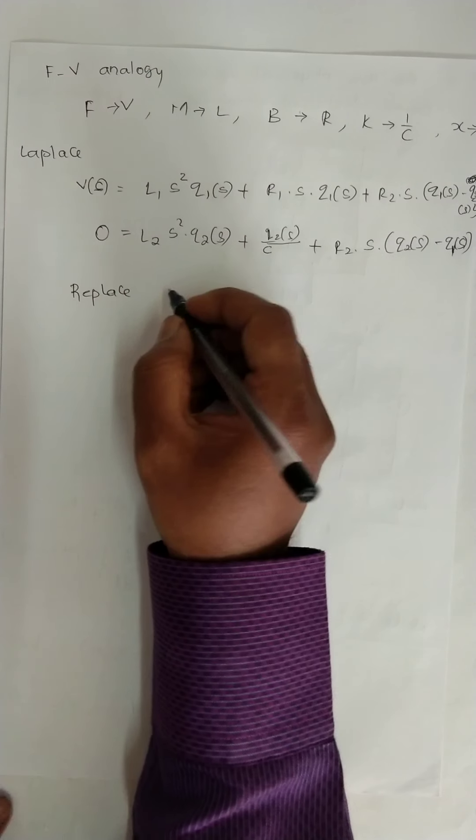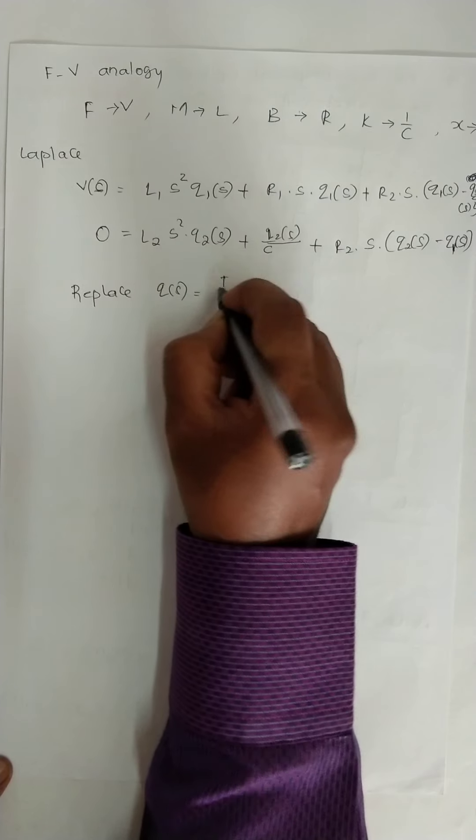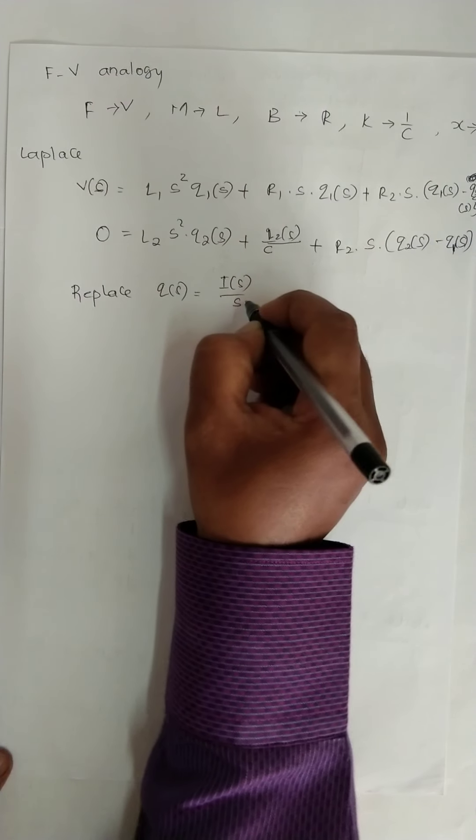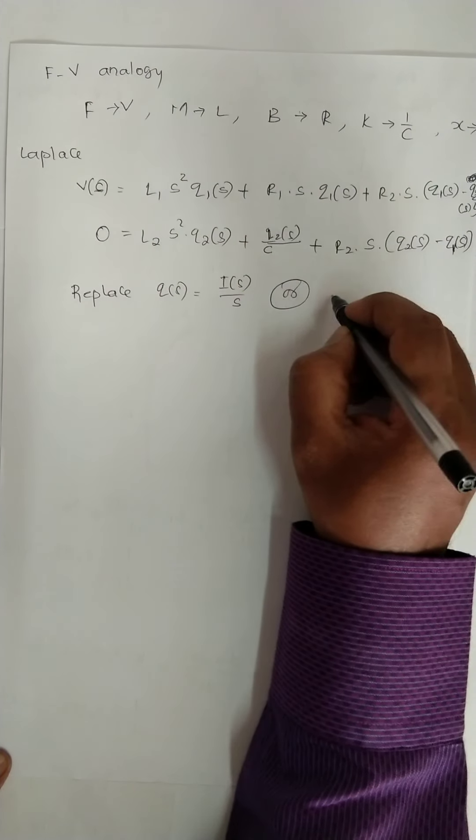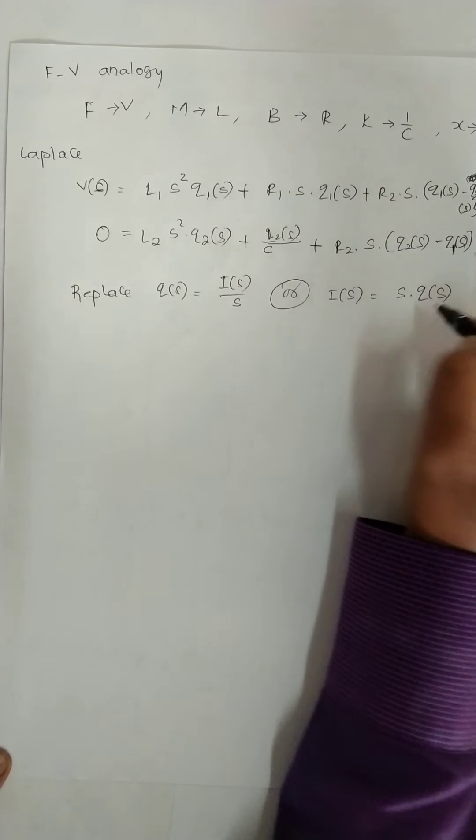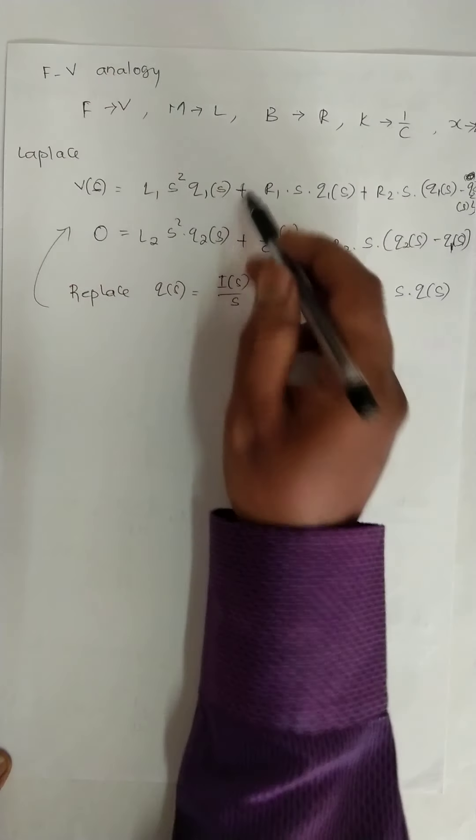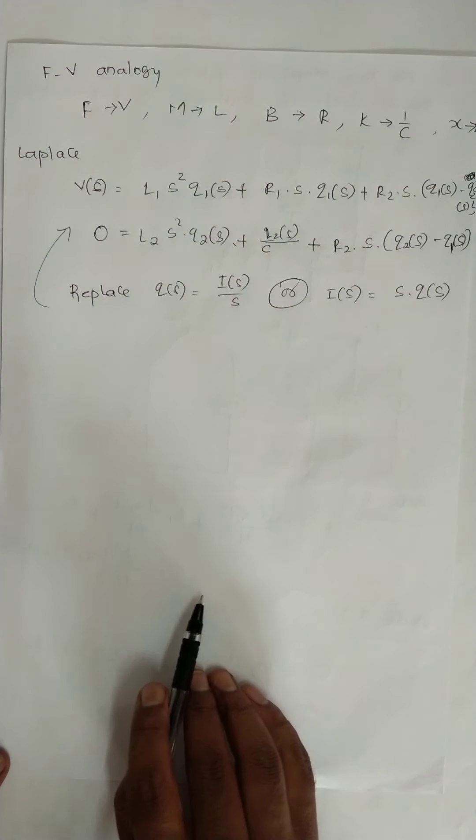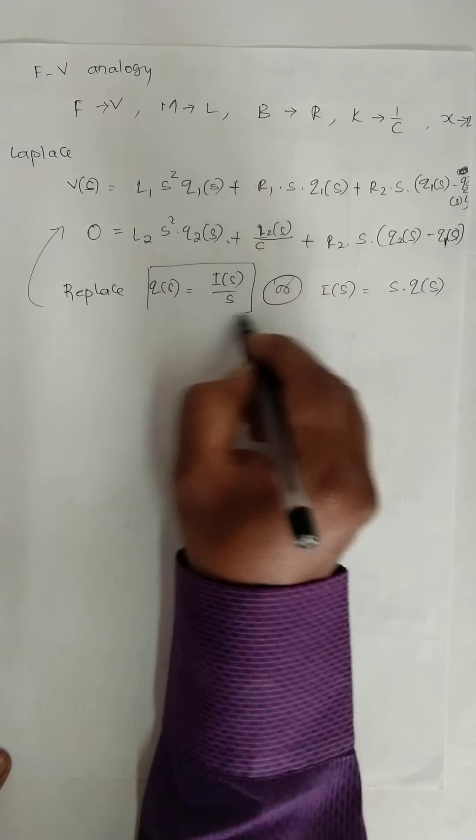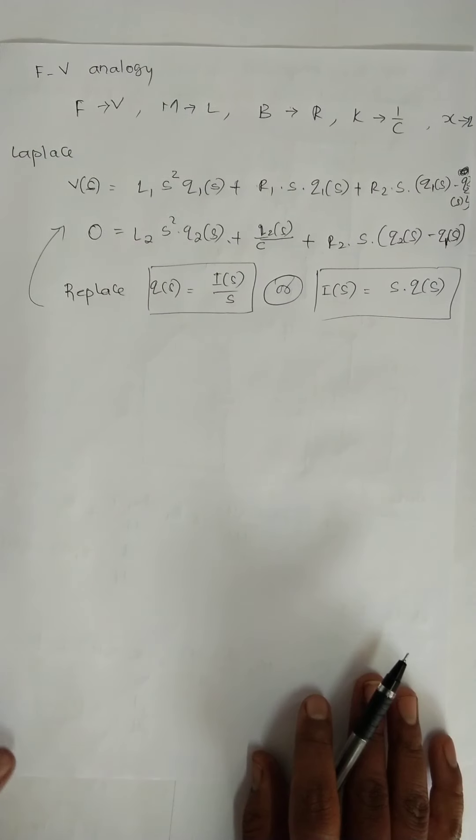Now, replace Q(s) is equal to I(s)/s, or I(s) is equal to s Q(s). In the above two equations, you replace these two terms, I(s) equal to s Q(s).